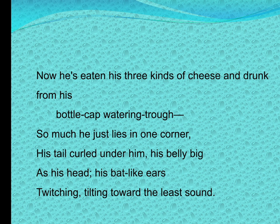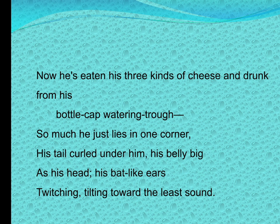He has eaten his three kinds of cheese and drunk from his bottle cap watering trough. The speaker feeds him with three kinds of cheese and makes him drink water from a bottle cap. The speaker has kept the mouse in a shoebox stuffed with an old nylon stocking, and is now feeding the mouse with all kinds of cheese he has — three kinds of cheese. The little mouse curls up like a baby in one corner of the box, his tail curled under him, his belly big.